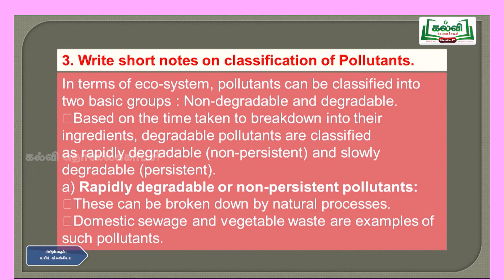Question number three: write short notes on classification of pollutants. In terms of ecosystem, pollutants can be classified into two basic groups: non-degradable and degradable. Non-degradable pollutants are those that cannot be broken down by microorganisms and remain in the environment. The best example for non-degradable waste is plastic, which is a major problem in the world today.